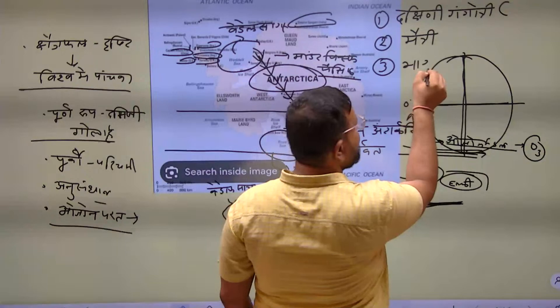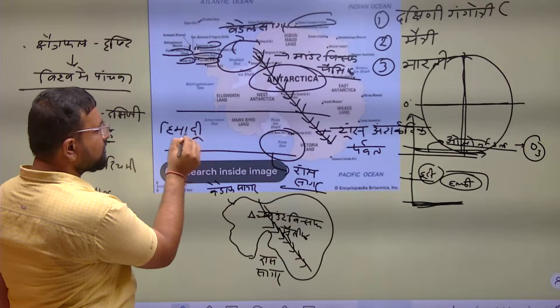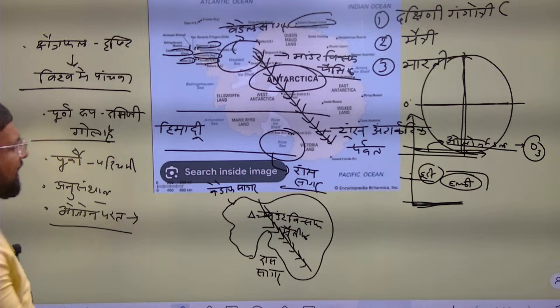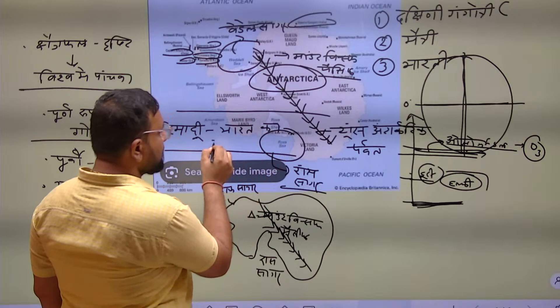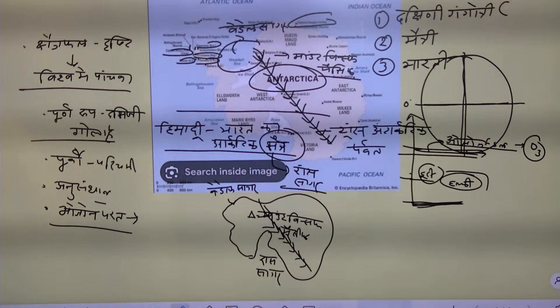Third is Bharti. You can write Himadri — this is in the Arctic, this is in the Antarctic, this is not in the Arctic, okay? Himadri is in the Arctic region. You can also write Bharti. The Arctic region's Pramukh Anusandhan Kendra (main research center) is there.